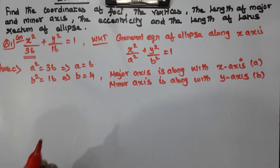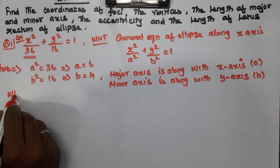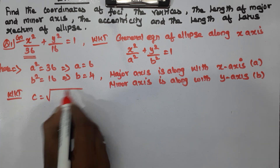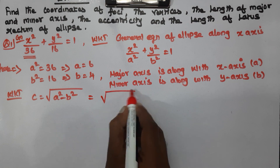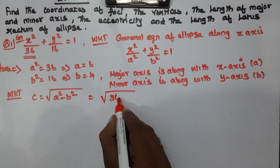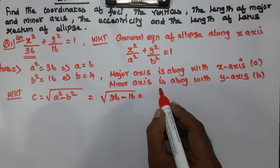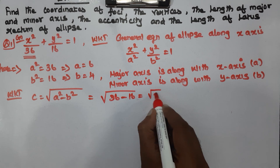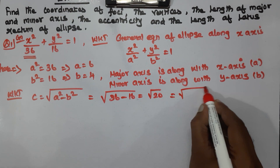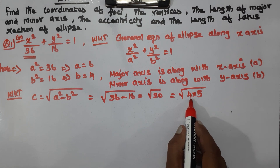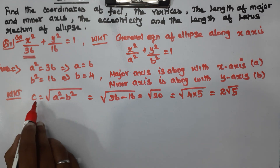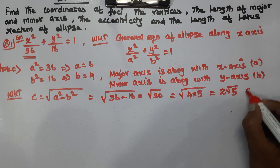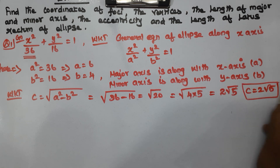Next, find c. We know that c equals the square root of a² minus b² — square root of 36 minus 16 — which is the square root of 20, giving c = 2√5.